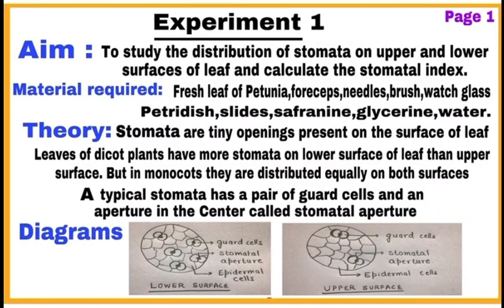Now start writing your first major experiment on page number 1. Write the aim of the experiment — that is, to study the distribution of stomata on upper and lower surfaces of a leaf and calculate the stomatal index. Then write material required and theory on this page. You don't have to write the procedure for the experiment.